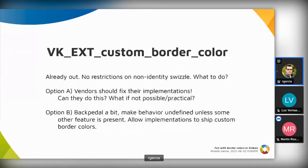We have this situation in which some implementations swizzled the border color and others did not. What could we do? There are several strategies we could follow. We could double down on the existing specification text and ask vendors to fix their implementations — but what happens if they cannot fix them, or if the fix is impractical due to performance impact? Unfortunately that was the actual situation, because some implementations could not be fixed. CTS tests were going to be created for these cases, and if an implementation failed to behave as mandated by the spec, it wouldn't pass conformance.